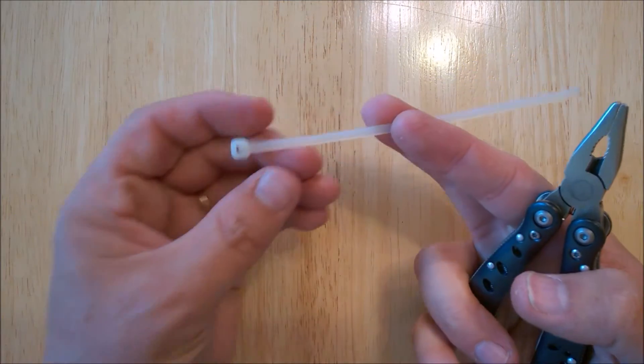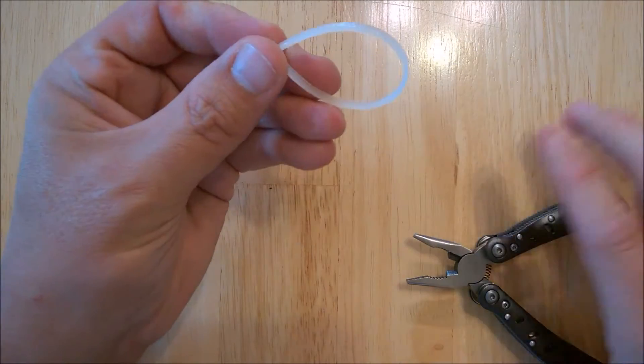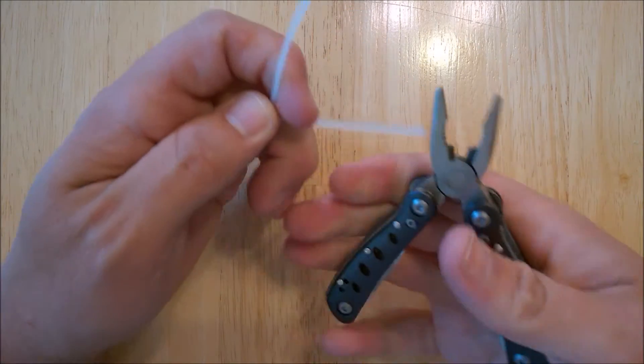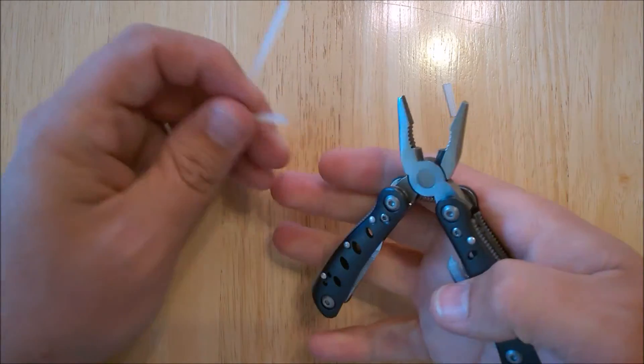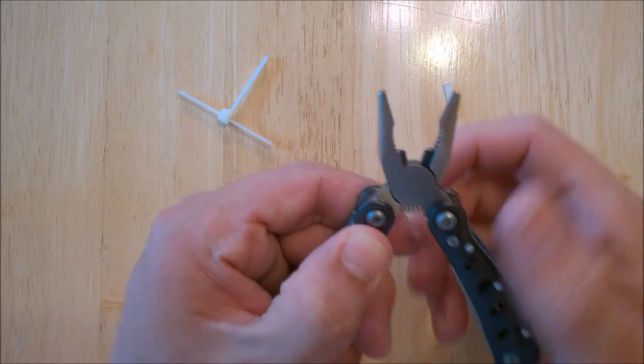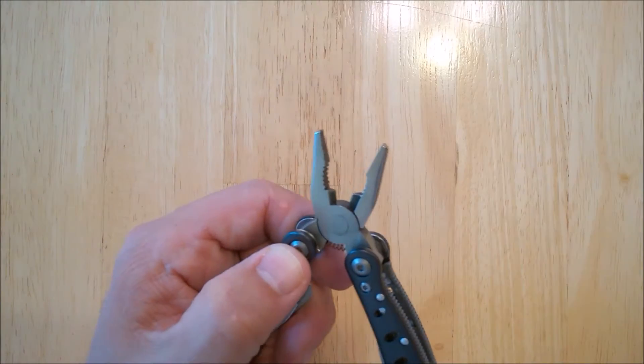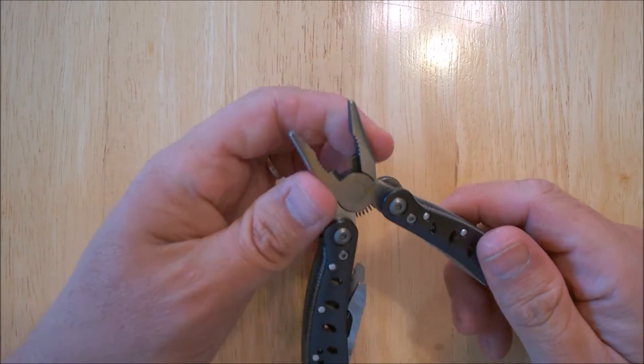This is sort of your standard zip tie kind of cut. Cuts through that, no problem at all. I wouldn't use it to cut through metal. You'll probably dent those in. If it's something soft like copper, a copper wire maybe, but certainly nothing harder than copper.